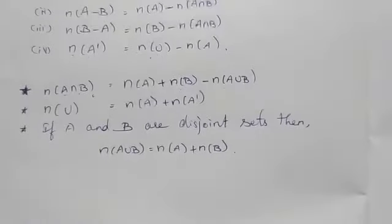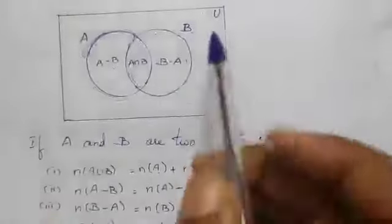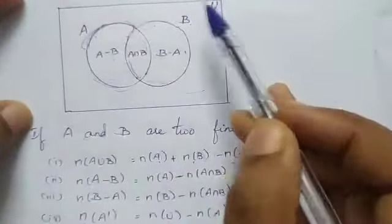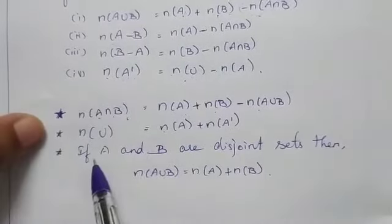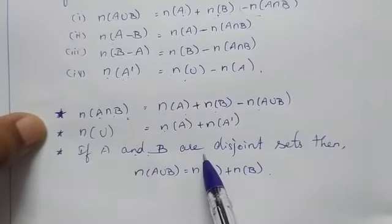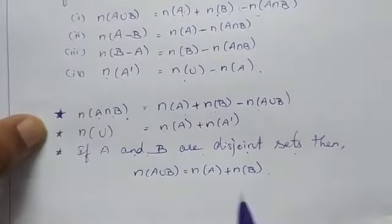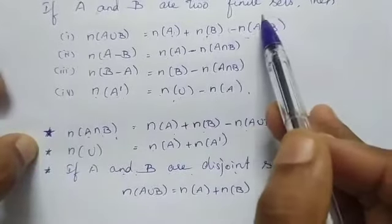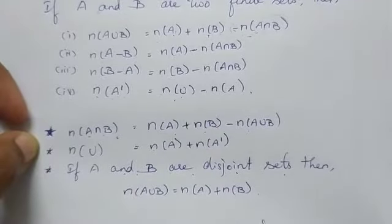Two more results. N of U is equal to N of A plus N of A dash. What is N of A? Only A. What is N of A dash? Except A. Therefore, N of U equals N of A plus N of A dash. One more thing: if A and B are disjoint sets, the intersection is 0. Therefore, N of A union B equals N of A plus N of B.